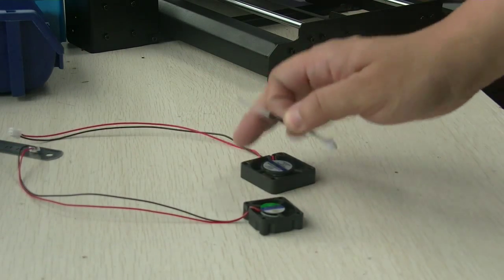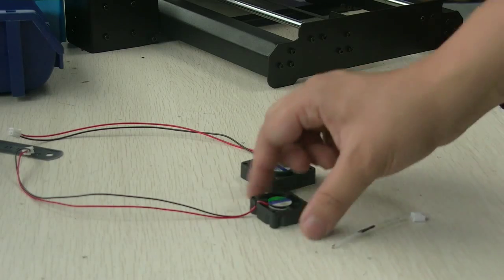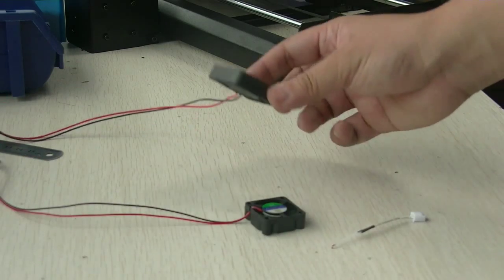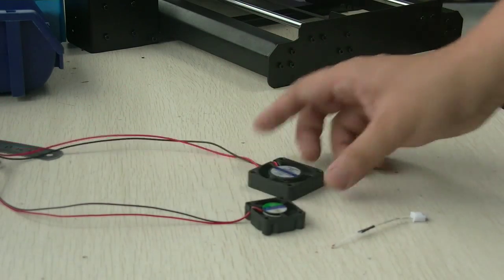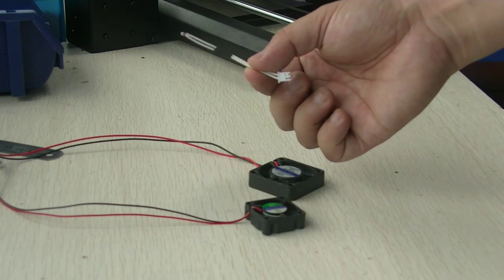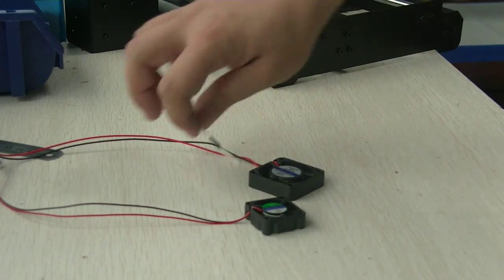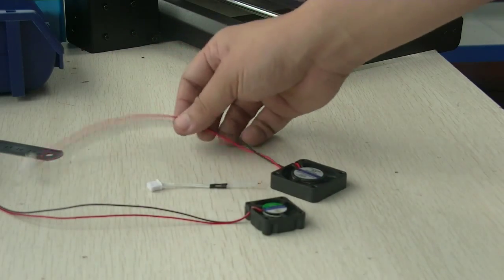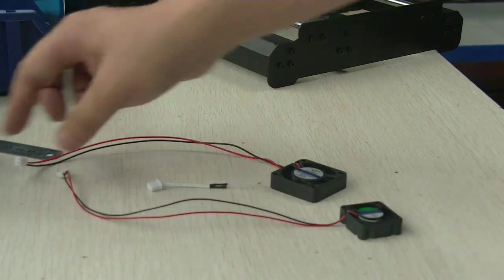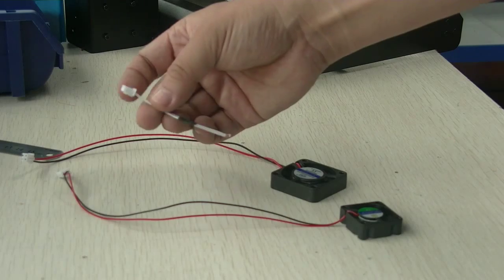Today we are going to show you how to replace the cooling fan, the extruder fan, and also the thermistor on the extruder. All these three are on the extruder and we have the quick coupling here, so it's easy to replace.